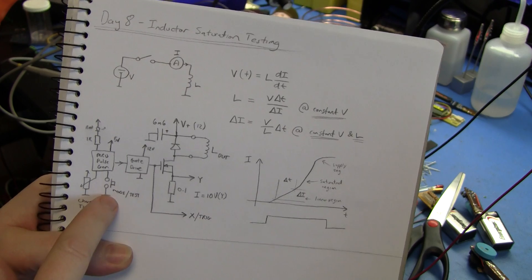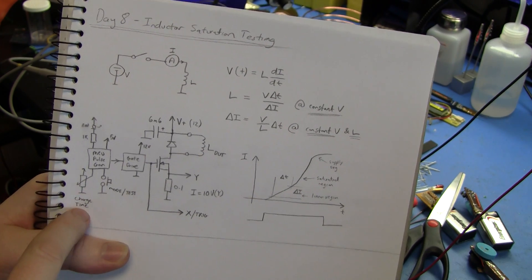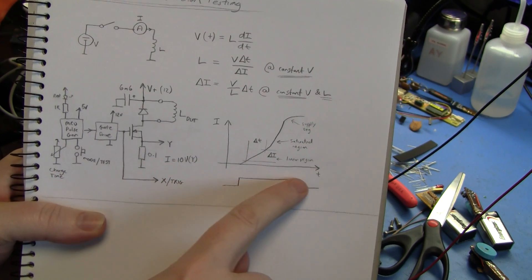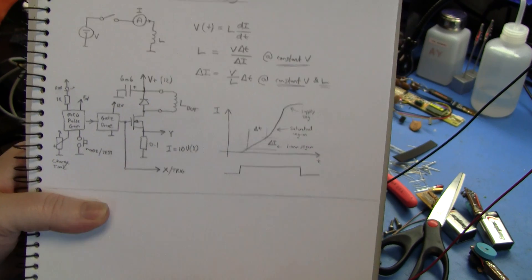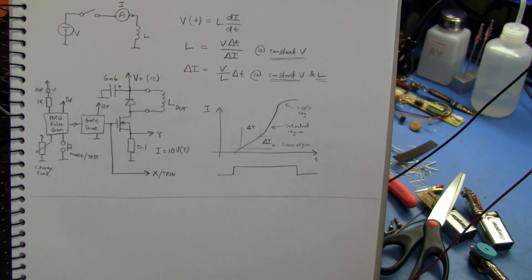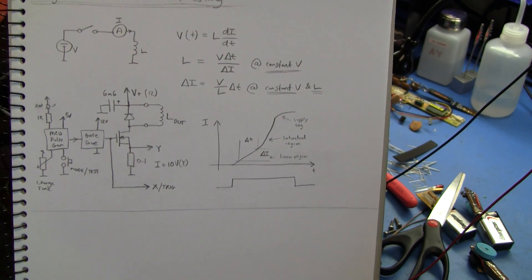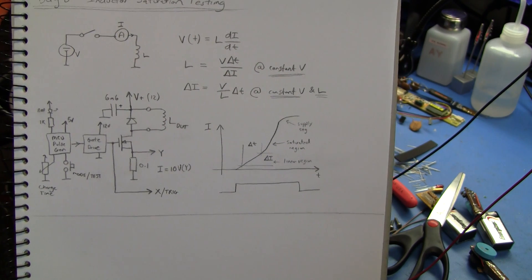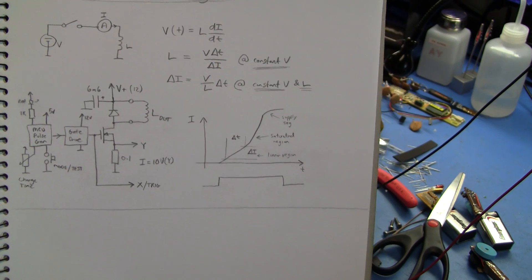The microcontroller has a button and a pot that sets the charge time so the amount of time that you're charging the inductor up for. The longer you have this on for obviously the more current is going to flow into that inductor until it either saturates or maybe it doesn't saturate because you just haven't charged it very long.